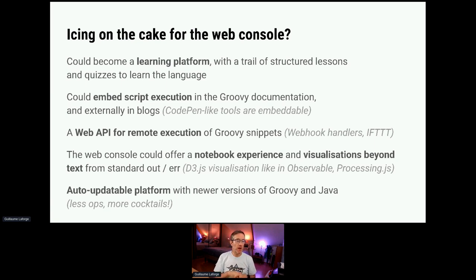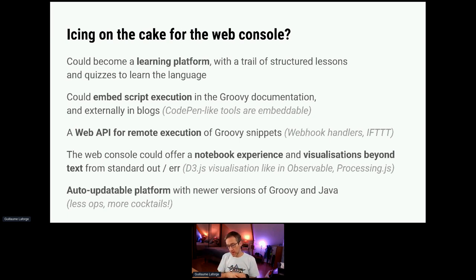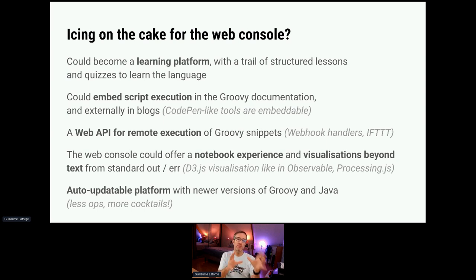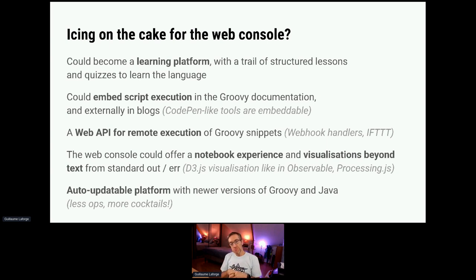Another idea: if it's a Groovy execution engine, perhaps we could use it for webhook handlers — IFTTT-kind-of webhook handlers. For example, you would react to some event like a commit on a GitHub project and execute a script hosted on the Groovy web console. A way of running scripts online without hosting your own server. There's also lots of stuff around notebooks like Jupyter notebooks — there are notebooks like Beaker X that have a Groovy kernel, which allows you to use Groovy as a notebook language to do things like machine learning.